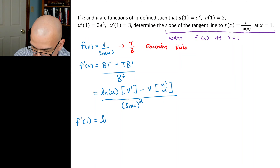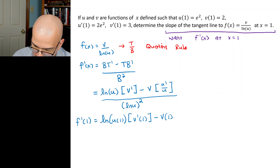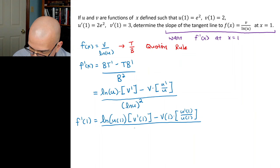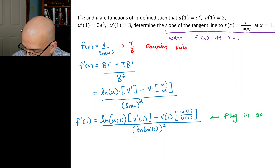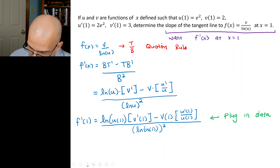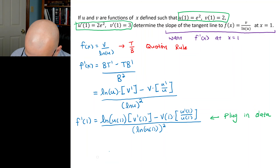Now we want to evaluate this at 1. So f'(1) = ln(u(1)) × v'(1) minus v(1) × [u'(1) / u(1)], all divided by [ln(u(1))]². Don't plug in the data until after you've taken all the necessary derivatives.